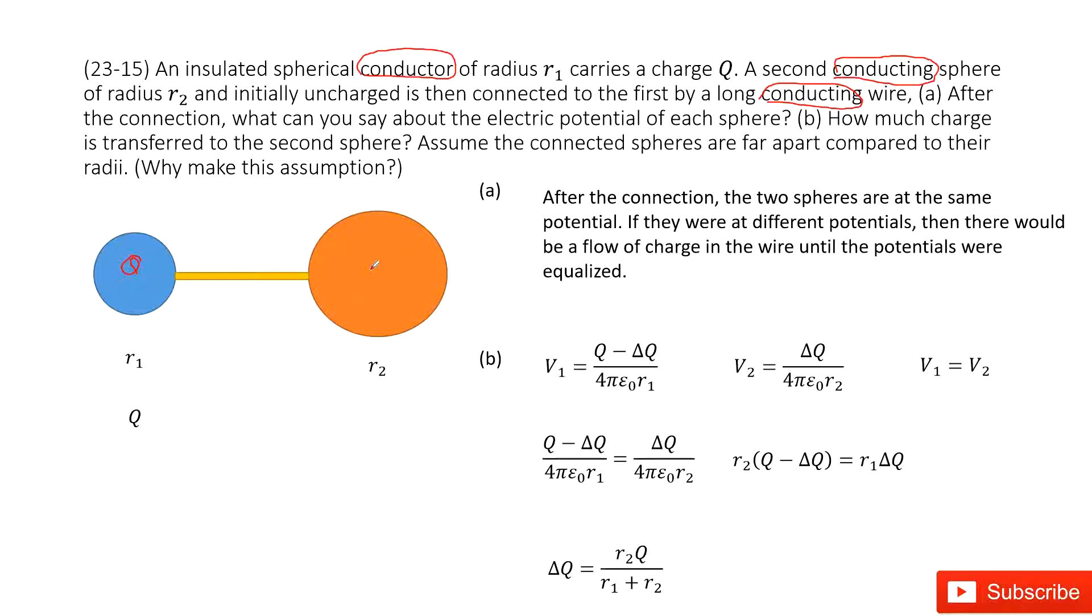And next, how much charge is transferred to the second object? In this case, if we want to write down the potential for object 1, we can say that it is Q minus ΔQ divided by 4πε₀R₁.